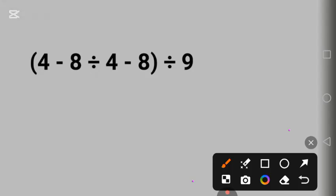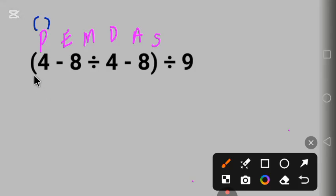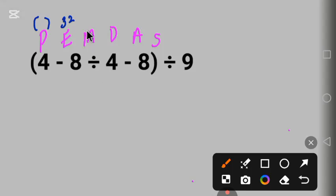This is called PEMDAS. Some countries call it a different name, some call it BODMAS. Using PEMDAS: P stands for parentheses — everything in parentheses is what we begin with. Next is E for exponent, for example 3 raised to the power 2. Do we have exponents here? No.